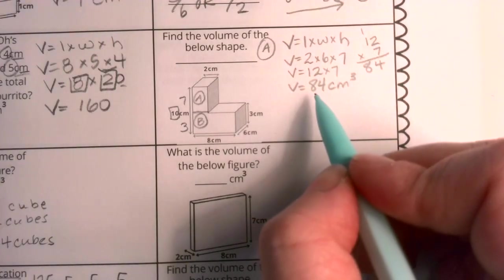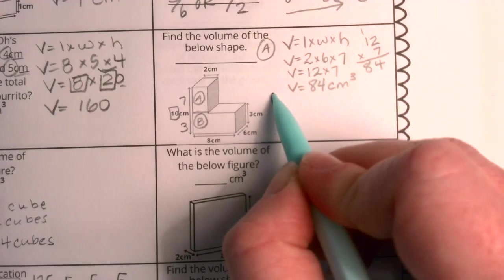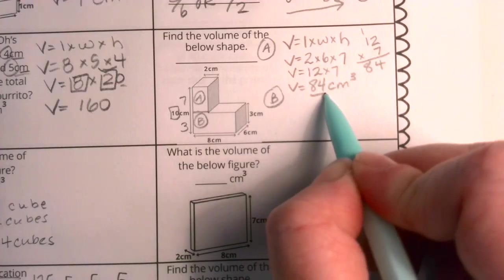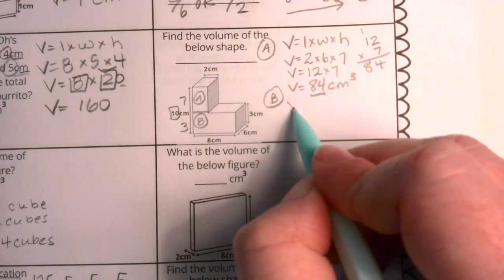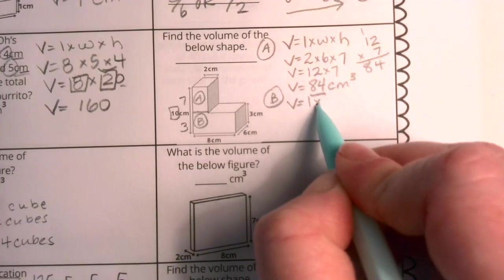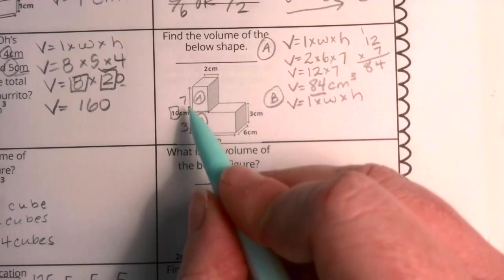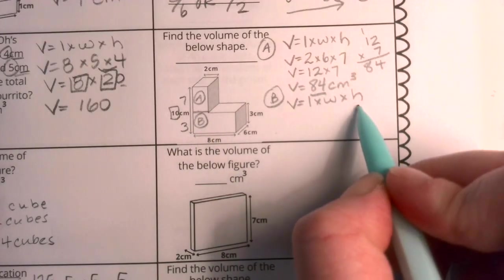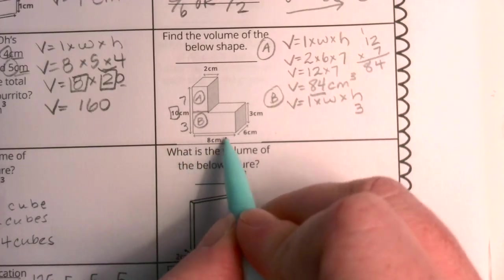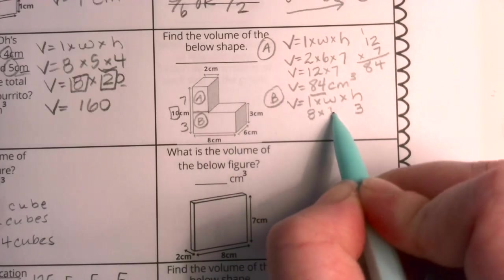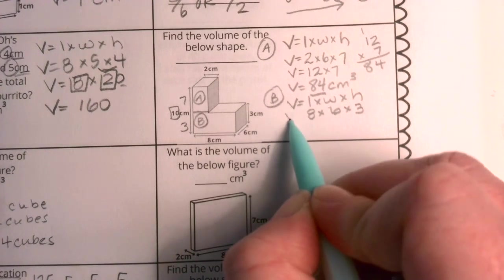I know that prism A has a volume of 84 centimeters cubed, but that's not my final answer. I'm going to have to get now the volume of prism B, and then I'm going to add this volume to 84 to get my final answer. Let's do the volume of prism B. I have length times width times height, which I can find on the figure. I've already found that the height is 3. I know on this measure that the length is 8, and I know that my width is 6.